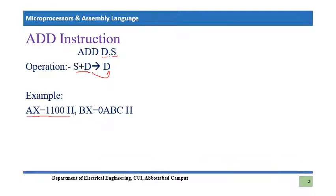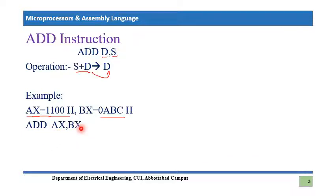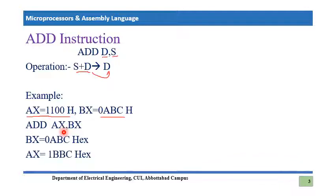For example, if the value of AX register is 0x0100 and BX is 0x0ABC, and we apply the instruction ADD AX, BX, then BX is the source and AX is the destination. BX plus AX are added and the result is stored in AX.